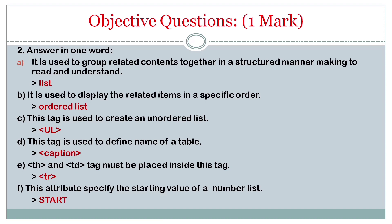This tag is used to create unordered list - it is UL. The tag is used to define name of a table - caption. TH and TD tag must be placed inside this tag - it is TR. This attribute specifies starting value of a number list - it is start.